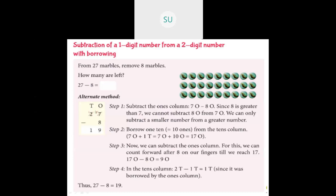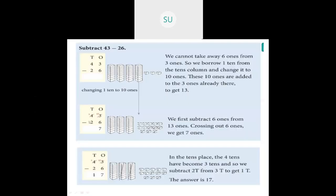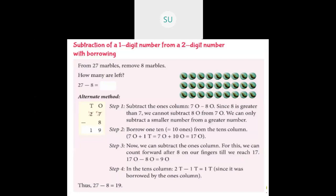Here we saw 27 minus 8. We subtract ones first. In ones we have 7 ones minus 8 ones, but 7 ones is smaller than 8 ones so we cannot subtract. So we borrow one 10 from the tens place. In tens place I have 2, so from 2 tens I borrow 1 ten. That 2 tens becomes 1 ten, and this 1 ten which we borrowed becomes 10 ones. 10 ones plus 7 ones is 17 ones. So 17 ones minus 8 ones is 9, and 1 minus 0 is 1. So 27 minus 8 is 19.